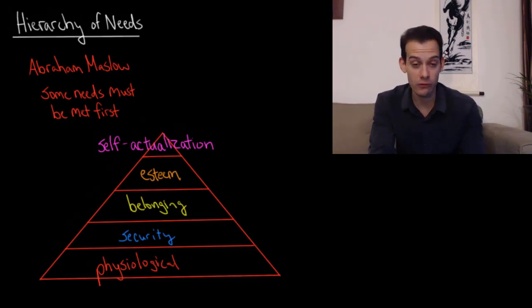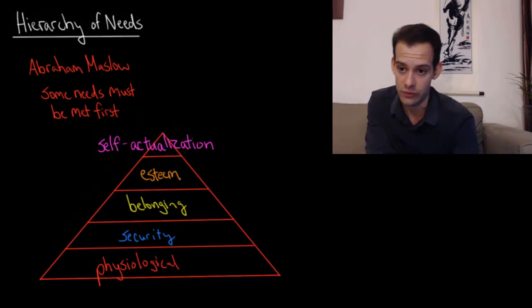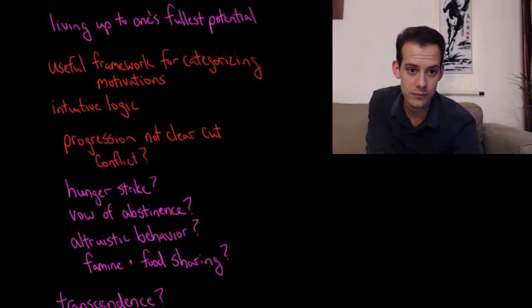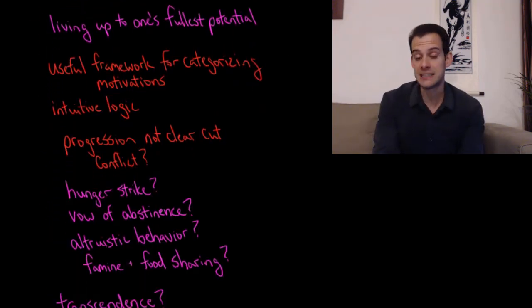Once we reach those motivations, we can move to the top of Maslow's hierarchy, which is what he called self-actualization. This is something I talk about in the personality unit. The basic idea of self-actualization is that it's living up to one's fullest potential, being the best person that you can be. Maslow thought we all have an innate drive towards this motivation, that we all want to make our way up to the top of this hierarchy.